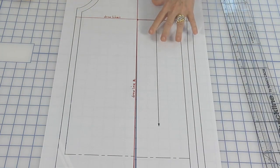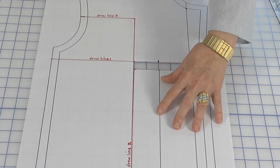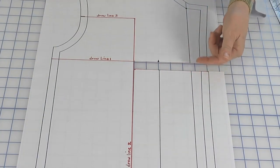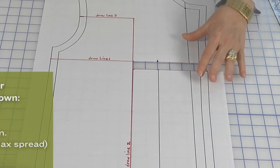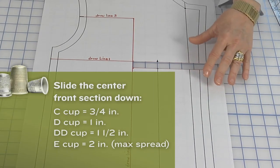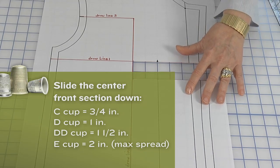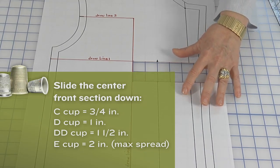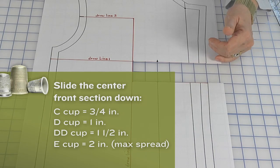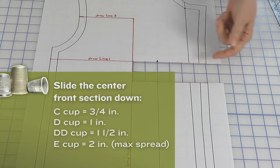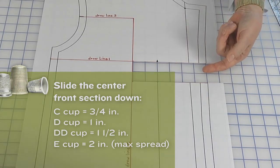This section will move down, and depending on how large the bust is, this can move about a half inch down for a smaller bust up to two inches. That's as far as this can move down because it will start to skew up the hem, and paper will be inserted here.